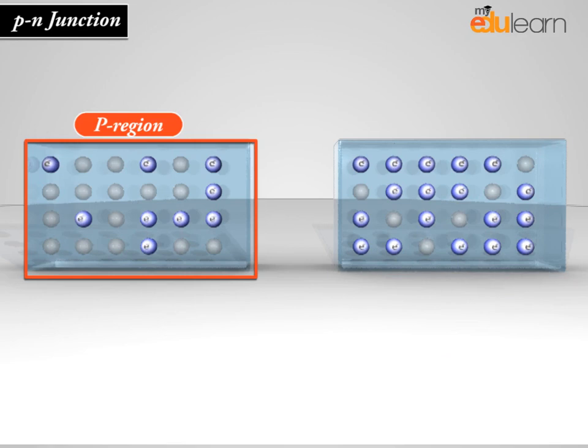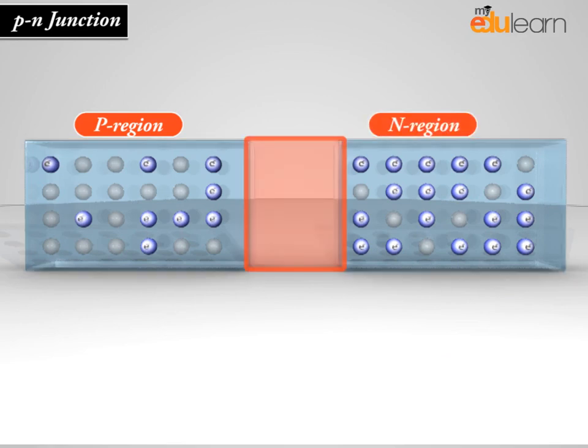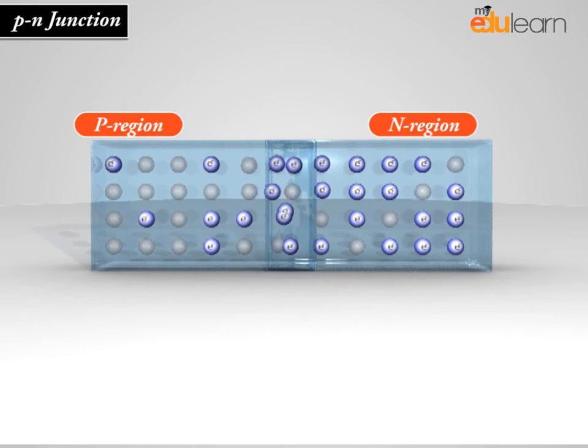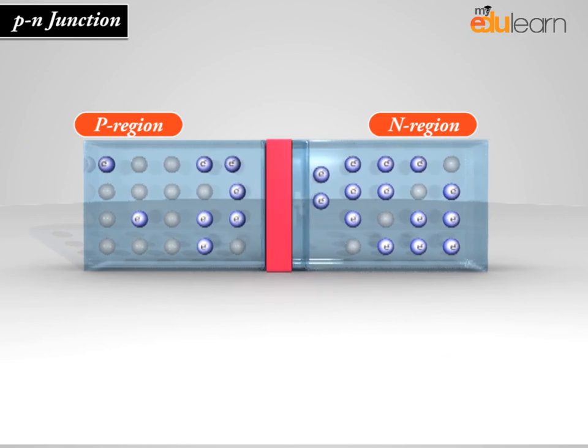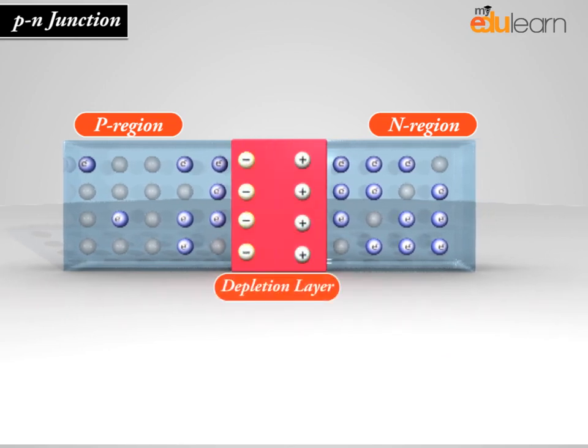When P-type and N-type materials are placed in contact with each other, the junction behaves very differently than either type of material alone.